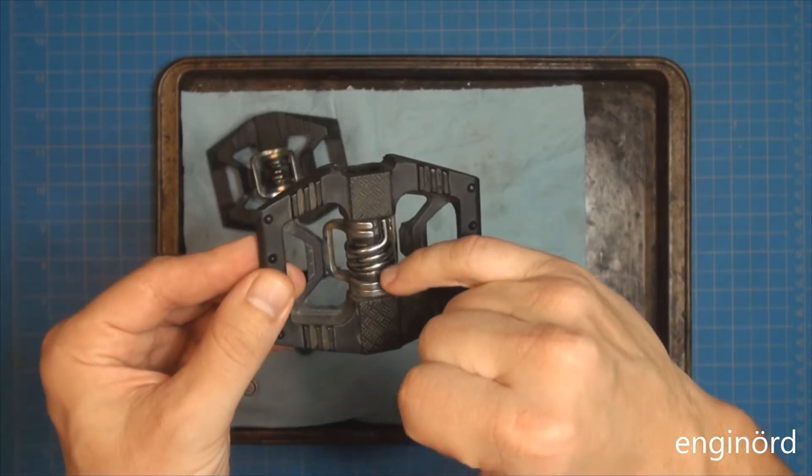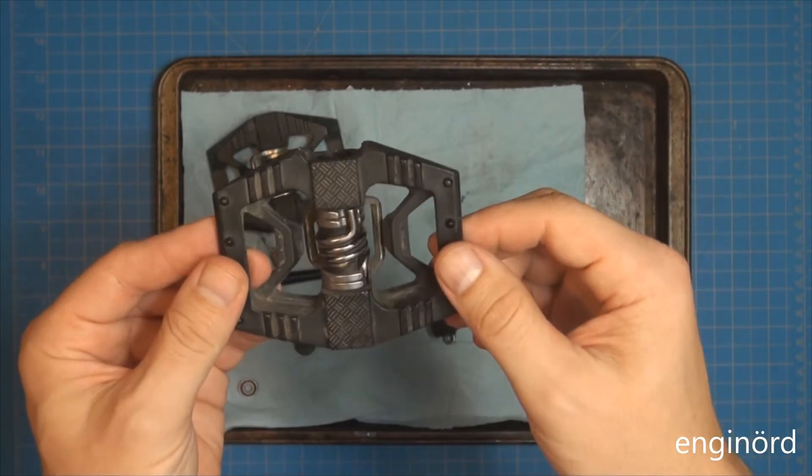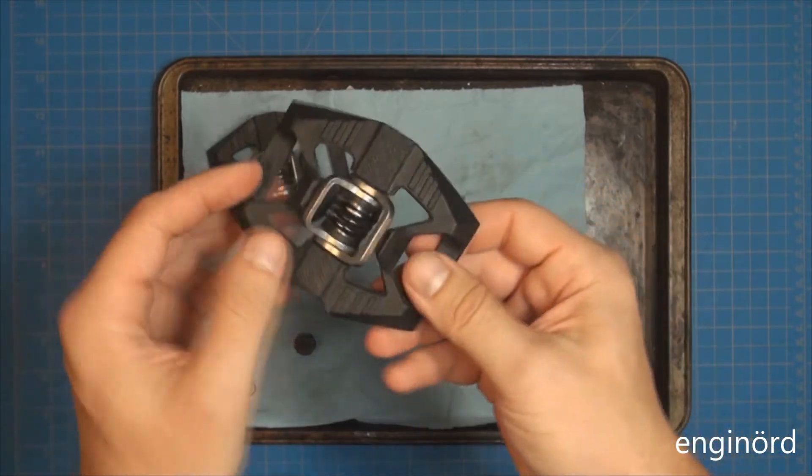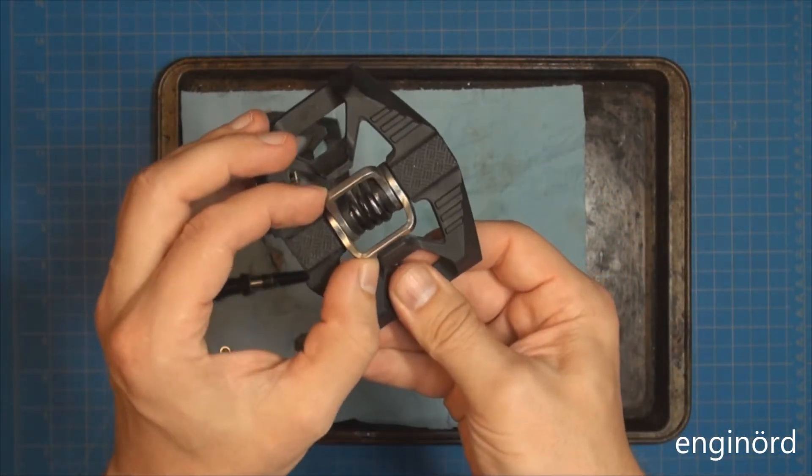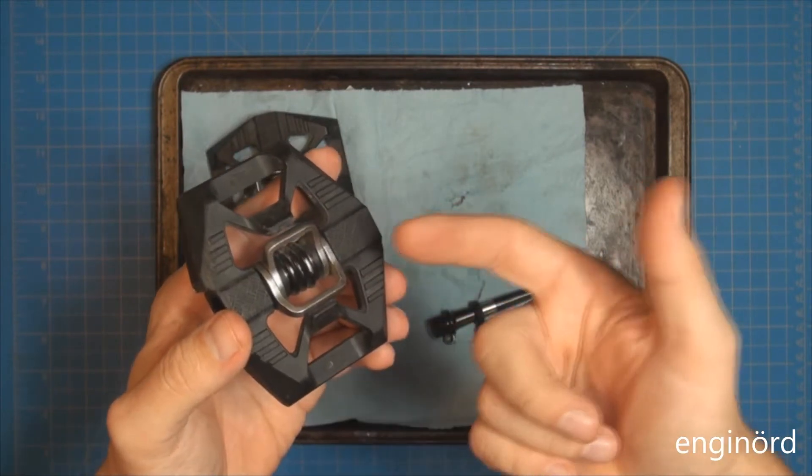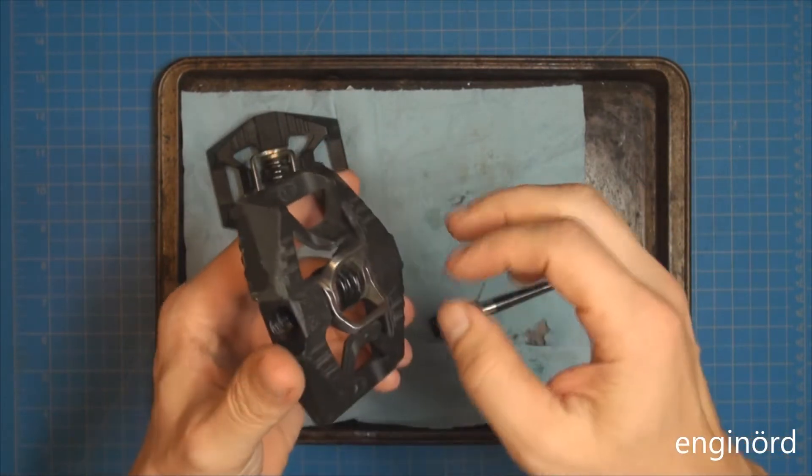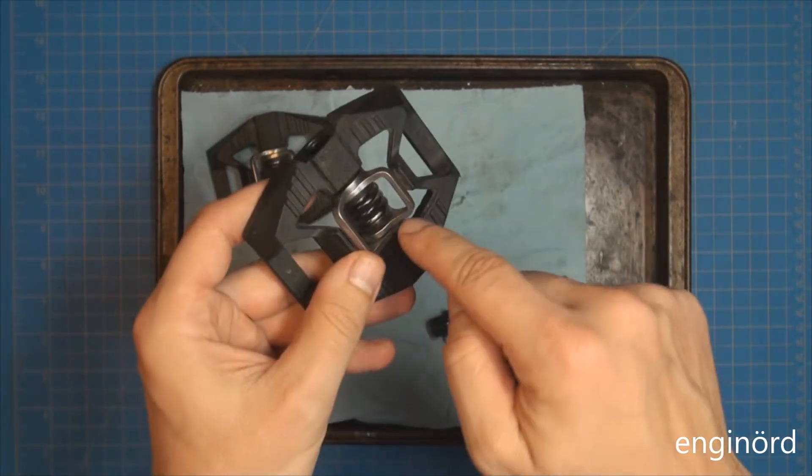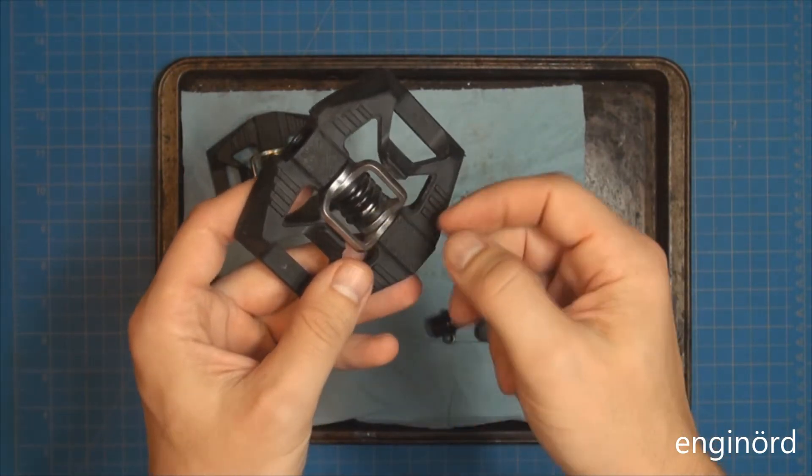And then inside there, there's some kind of tube, and that is holding these clips together. That's where the shoes with the cleats on the bottom can engage it and then basically lock in in this space.